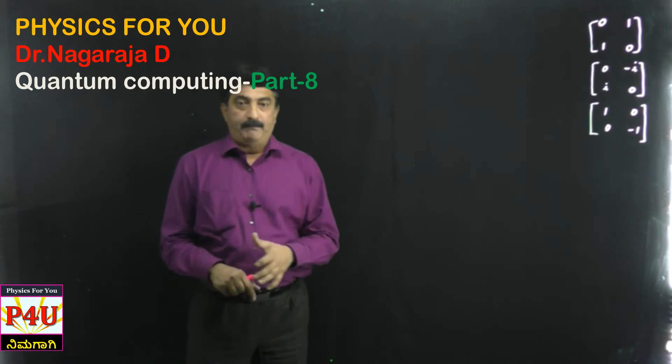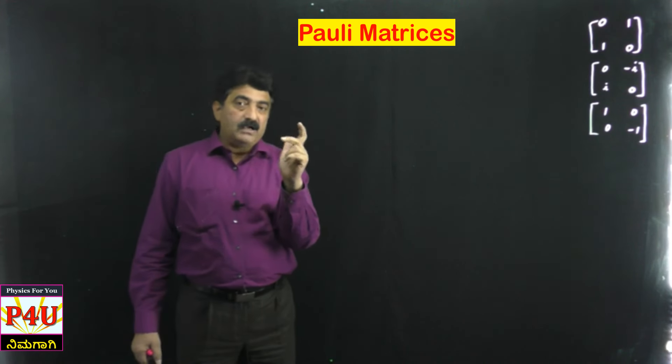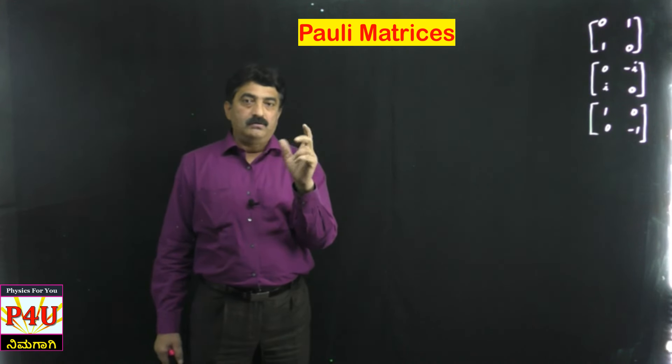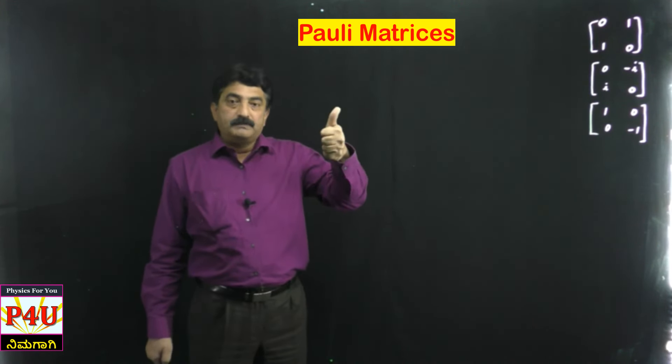You have heard of the name Pauli - Pauli's exclusion principle. He says no two electrons can have all four quantum numbers the same. So he only introduced the spin concept. See the spinning of the electron - please see the physics part of this.